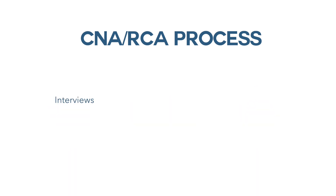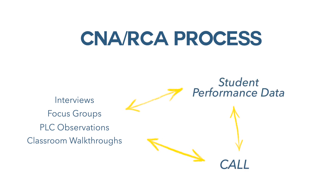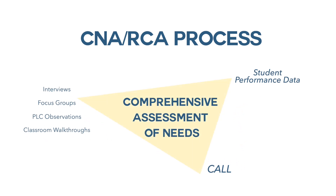The use of interviews, focus groups, PLC observations, and classroom walkthroughs are triangulated with student performance data and the four domains Comprehensive Assessment of Leadership for Learning, or CALL, to provide staff with a comprehensive assessment of needs. Additionally, the CNA RCA process asks schools to look at how they presently allocate resources that, in part, may contribute to the inequities or gaps in performance within or between student groups in their school.